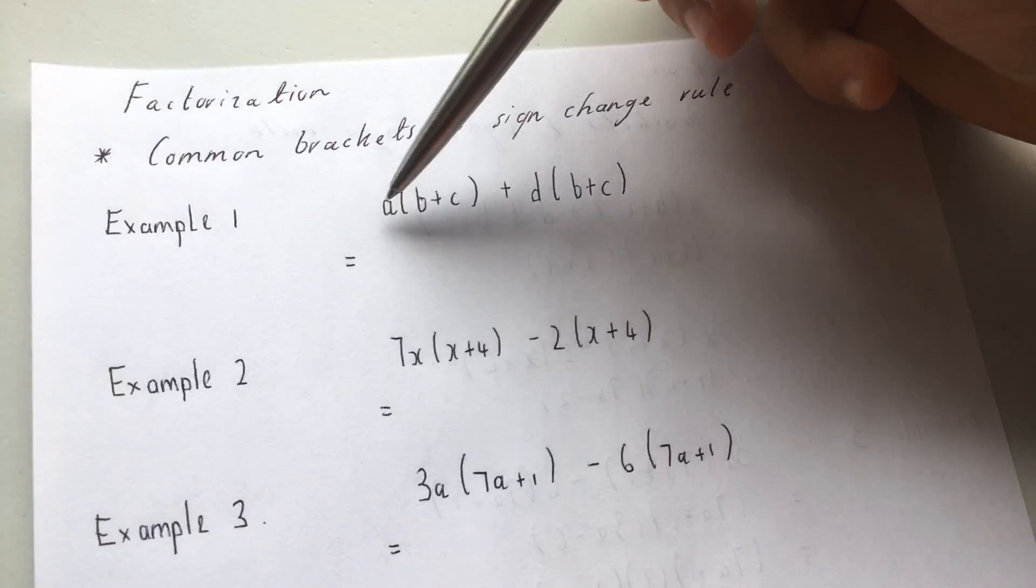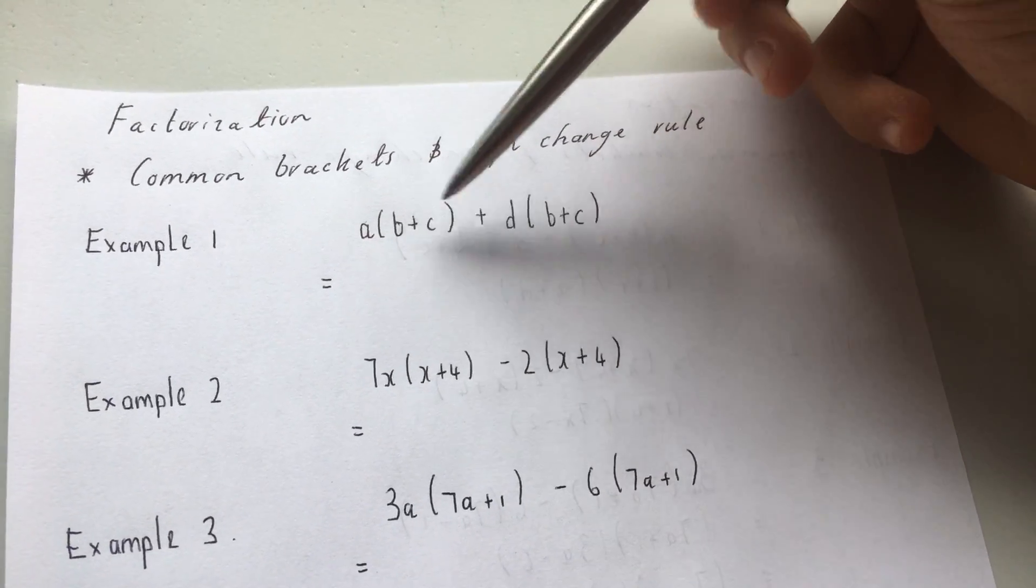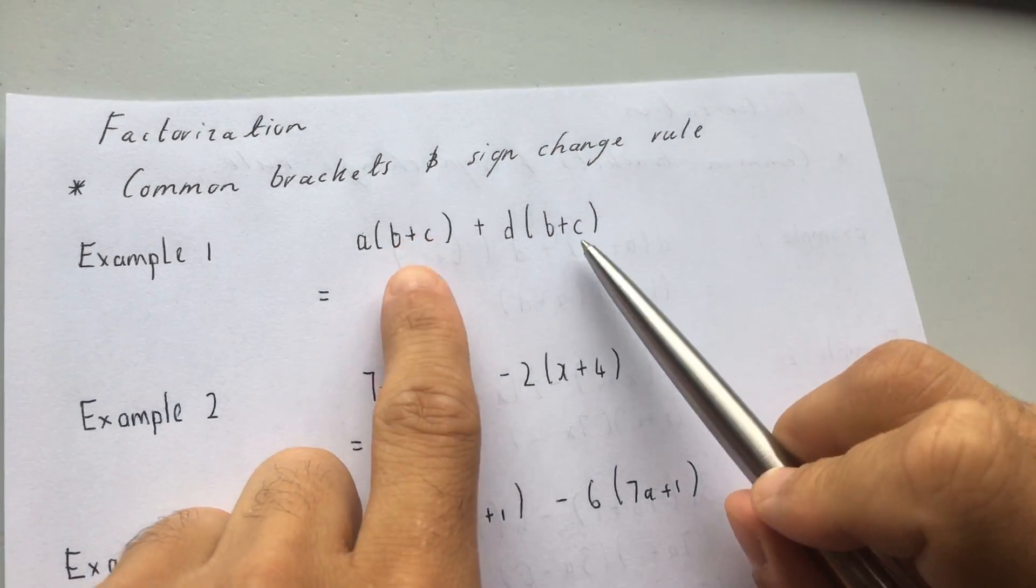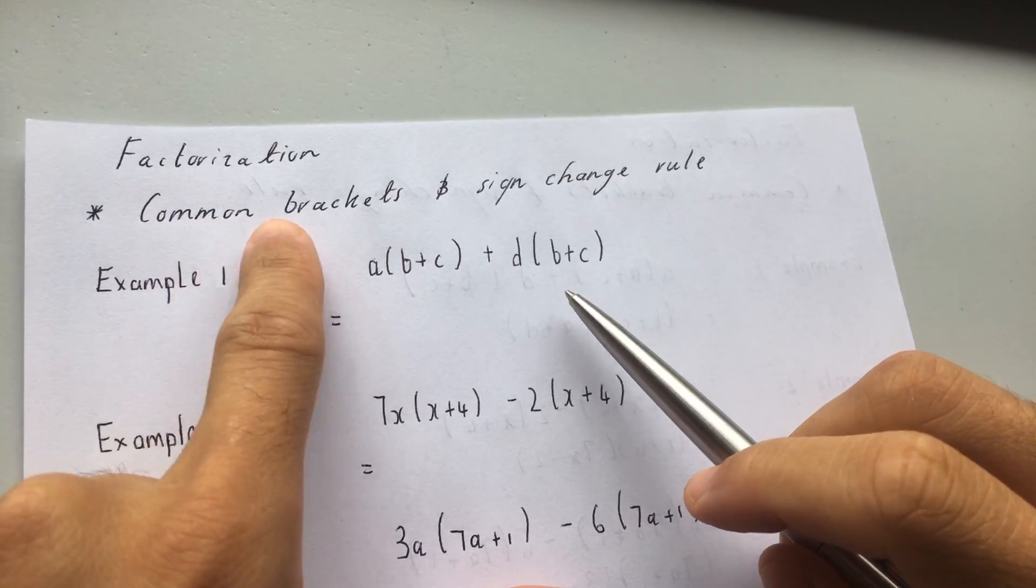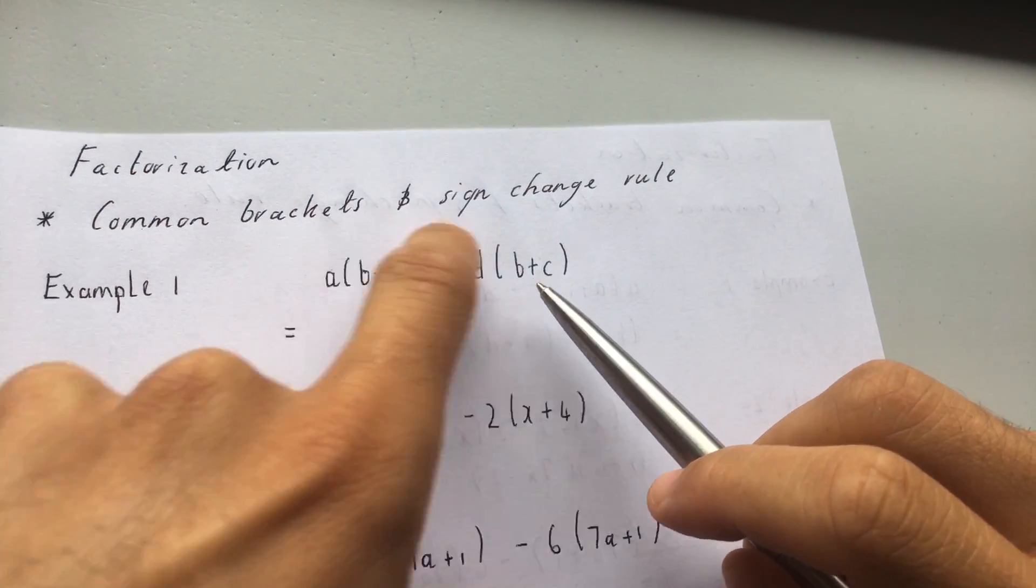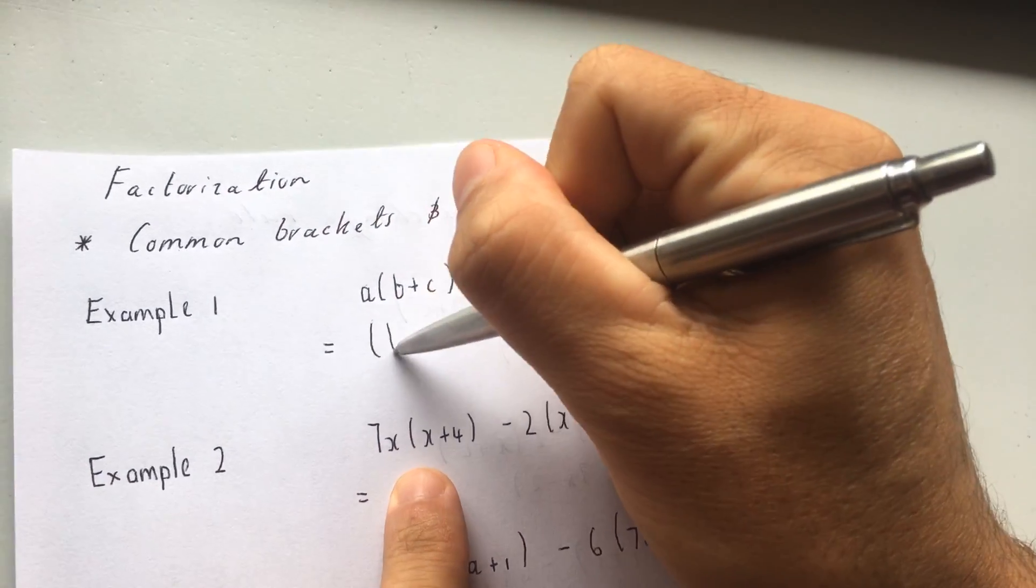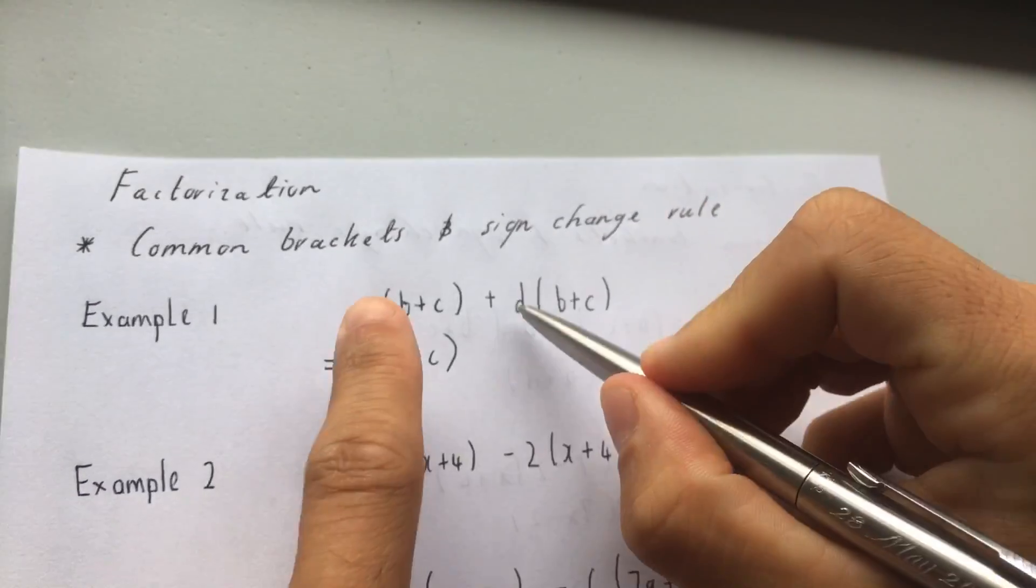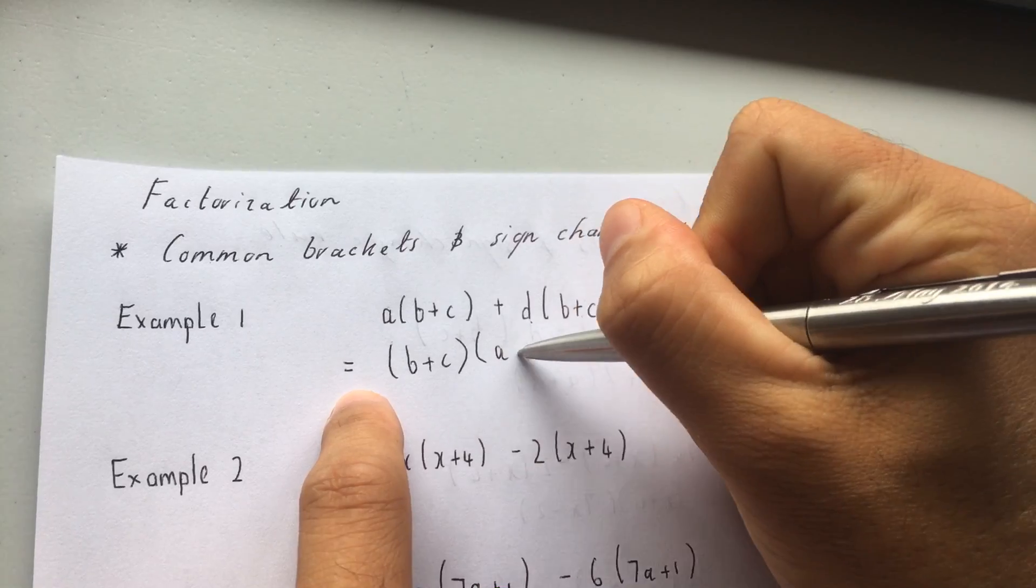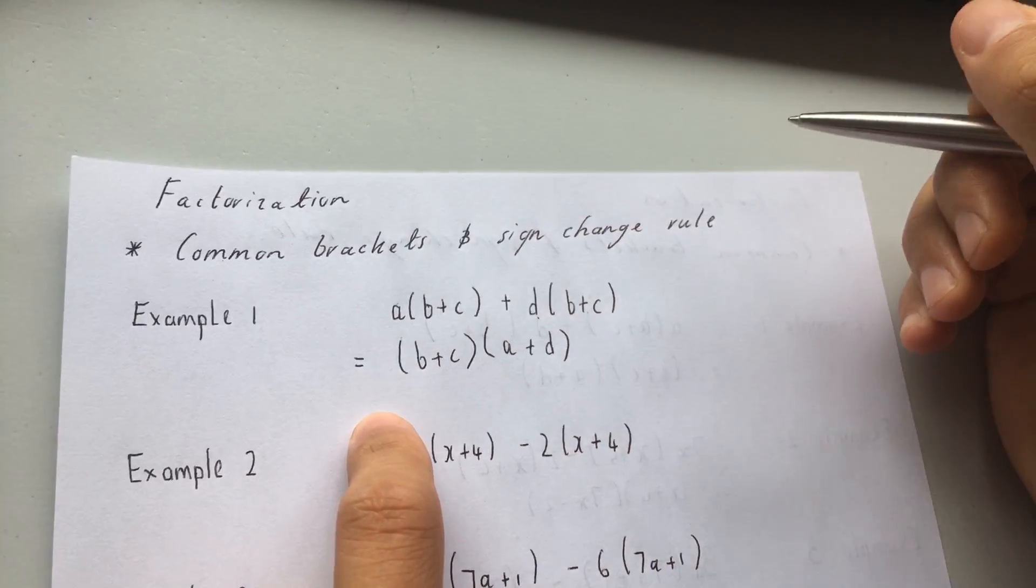So here I've got an expression A open bracket B plus C and then I've got a B plus C again in a bracket. I call this factorization by Common Brackets and Sign Change Rule. This is a Common Bracket B plus C. So I'm going to pull out the bracket B plus C. Whatever I'm left with goes into the brackets next to it. Easy as that.